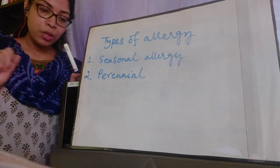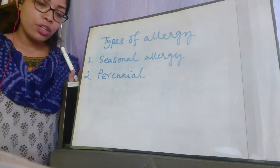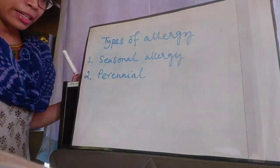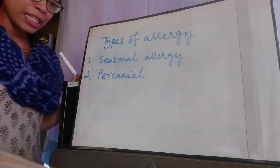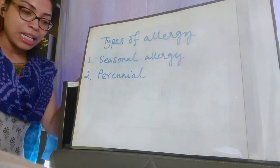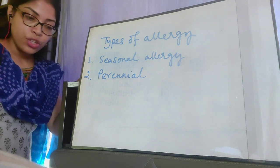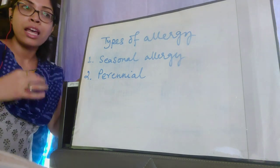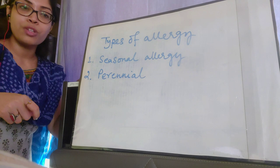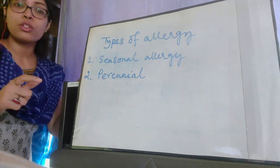Next is dermatitis — any medical skin condition. The definition is: a medical condition in which the skin becomes red, swollen, and sore, sometimes with small blisters resulting from direct irritation of the skin by an external agent or an allergic reaction to it. Lastly, wheezing means breathing with a whistling or rattling sound in the chest as a result of obstruction in the air passage. If there is any obstruction in the air passages, that rattling or whistling sound occurs, and that condition is known as wheezing.